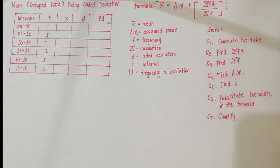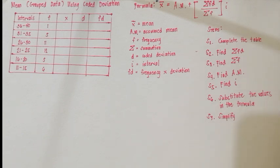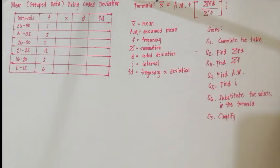I have prepared seven steps to follow in solving for the mean of grouped data using the coded deviation. Our first step is to complete the table. As you can see, we don't have values for X, D, and FD yet.